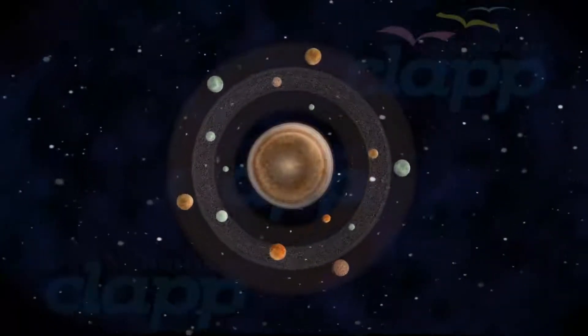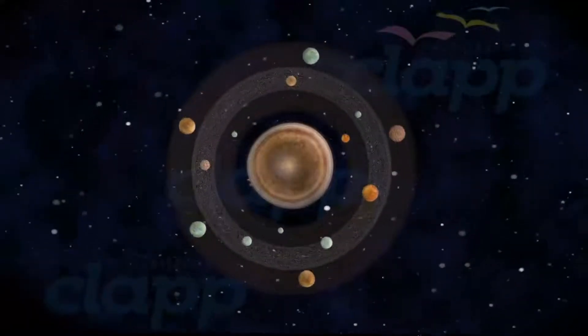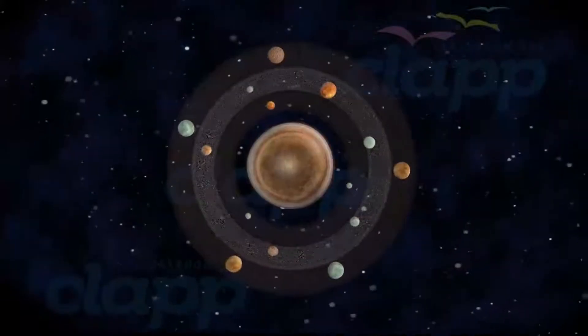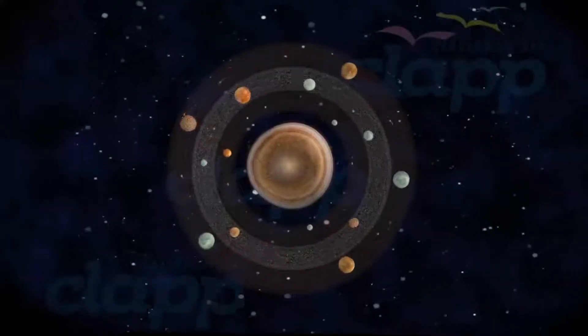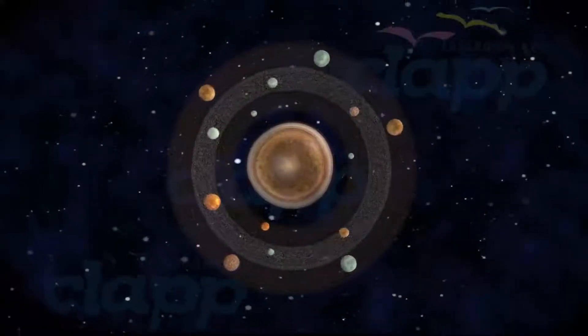Surrounding Jupiter is a faint planetary ring system and a powerful magnetosphere. Jupiter's magnetic tail is nearly 800 million kilometers long, covering the entire distance to Saturn's orbit.